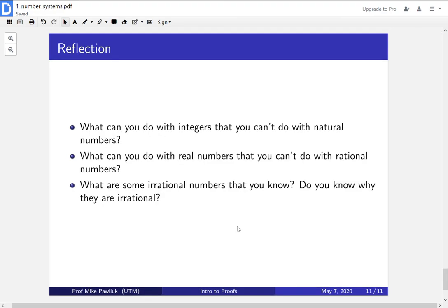Finally, let's take a moment to reflect on the material we saw today. So what can you do with integers that you can't do with natural numbers? Put another way, why did we introduce integers? What can you do with real numbers that you can't do with rational numbers? Put another way, why did we introduce real numbers? Finally, what are some irrational numbers that you know? Do you know why they are irrational?